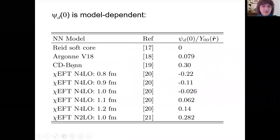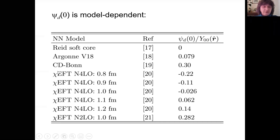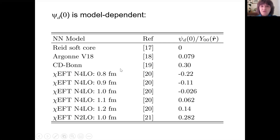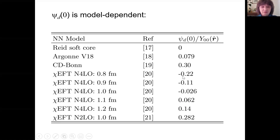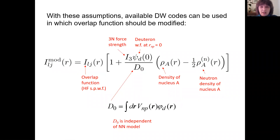To illustrate, I collected in a table the values of the deuteron wave function at zero for a set of different nucleon-nucleon models. For CD-Bonn, this value is almost four times stronger than for AV18. For several versions of chiral EFT at N2LO with five different regulators, we do not even know the sign of this wave function — it can be either positive or negative. This tells us that the corrections arising from three-nucleon force are extremely model-sensitive.